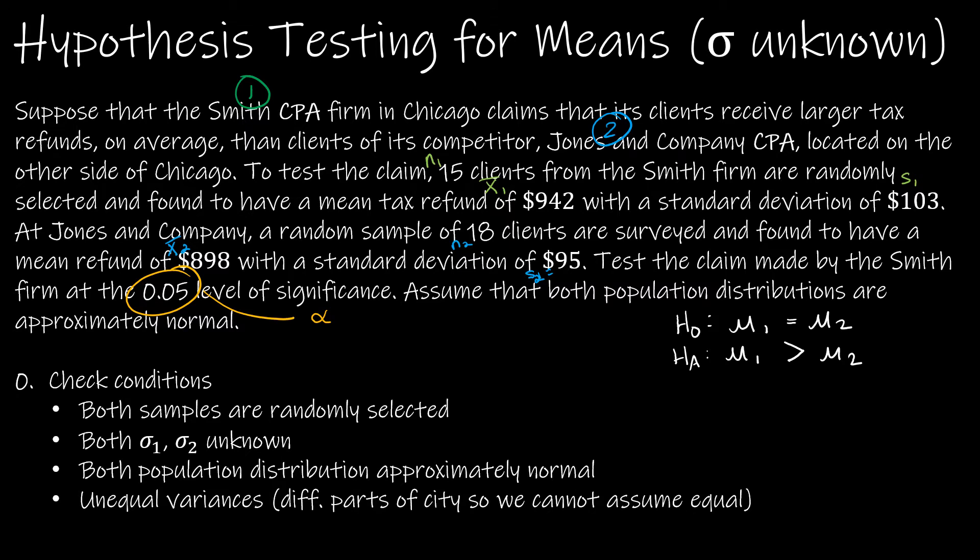Let's check conditions before we continue. First, both are randomly selected. We are given that in the question. Both population standard deviations are unknown. Yes, clearly because they aren't given to us. Both population distributions are approximately normal. Yep.